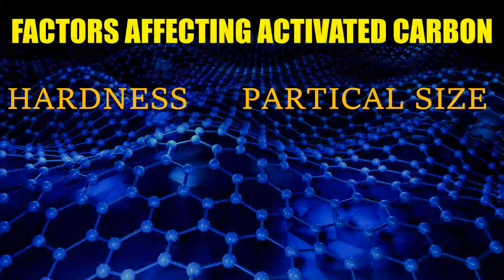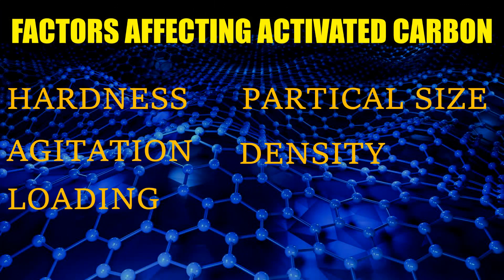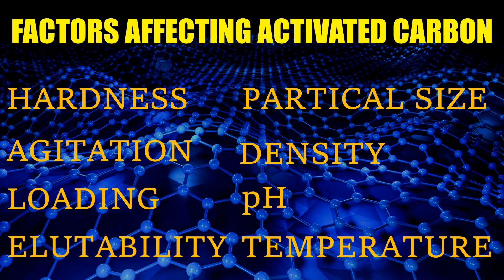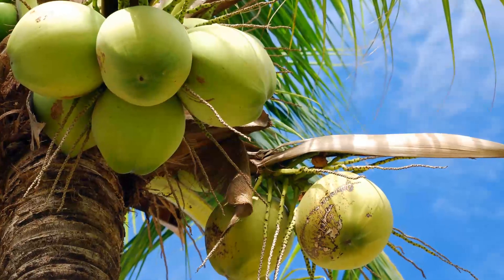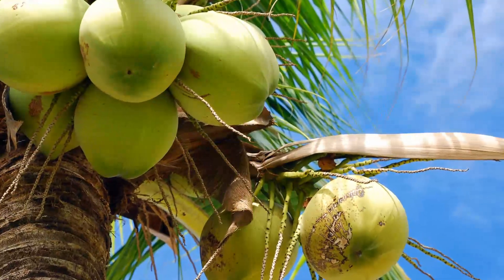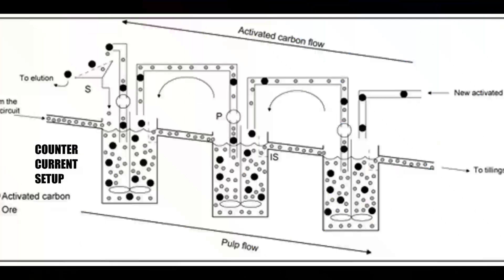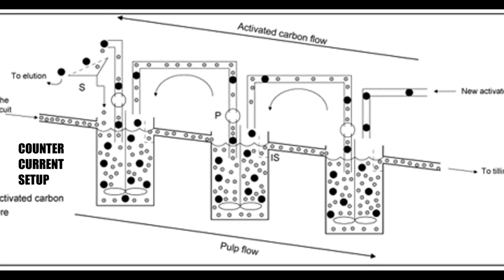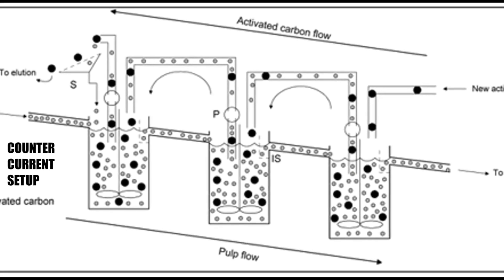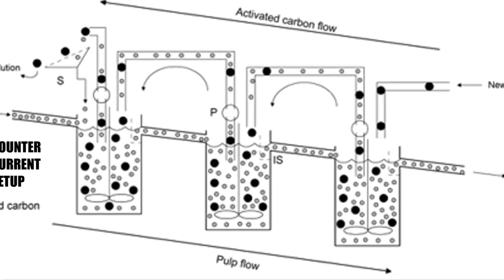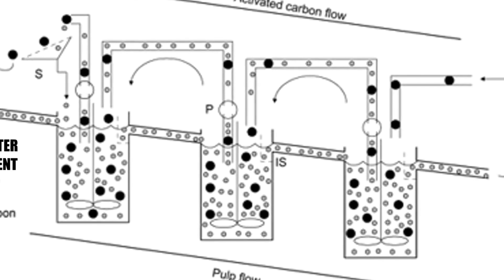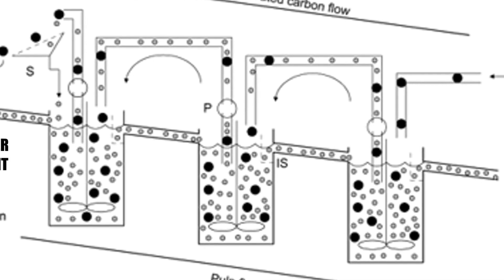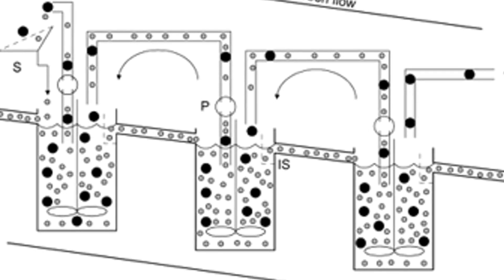For gold recovery in CIP and CIL applications, the key factors are hardness, kinetic activity, equilibrium loading, elutability, particle size characteristics, and density. Activated carbon made from coconut shells is the most common type used in CIP or CIL plants. In carbon in pulp (CIP), activated carbon is added directly to the cyanated pulp — the crushed, ground, and leached slurry — and flows countercurrent to the pulp in a series of semi-batch adsorbers. Because of carbon's hardness, it exhibits low attrition during movement, agitation, and activation.